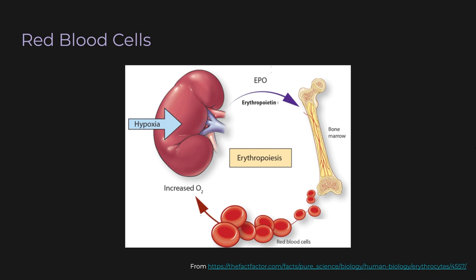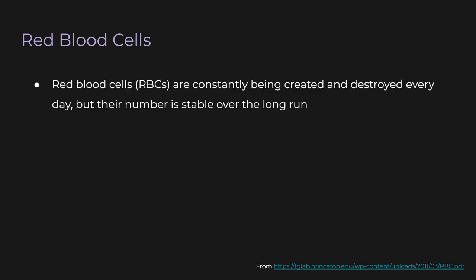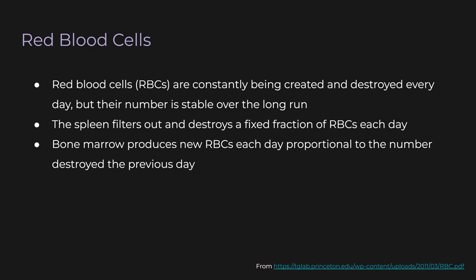For our next application, we're going to look at red blood cell production in the body. Your bone marrow produces red blood cells. They travel around your cardiovascular system and do their thing, and they get filtered through the spleen. The spleen destroys a certain percentage of red blood cells to remove unhealthy cells from circulation. But the more red blood cells the spleen destroys, the more the spleen releases a hormone called erythropoietin or EPO, which stimulates the bone marrow to produce more red blood cells. So there's a closed loop, and the bone marrow and spleen work together to maintain a steady number of red blood cells in the body. Let's state this in more precise language. RBCs are created and destroyed every day, but we assume their number is stable over the long run. The spleen filters out and destroys a fixed fraction of RBCs each day. We assume this fraction is the same every day. The bone marrow produces new RBCs each day in proportion to how many the spleen destroyed on the previous day. We also assume this proportion is constant. The problem we want to solve is, what is the RBC count on the nth day? We can model this with linear algebra.